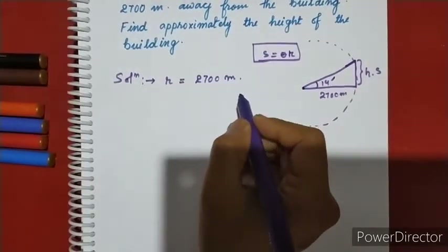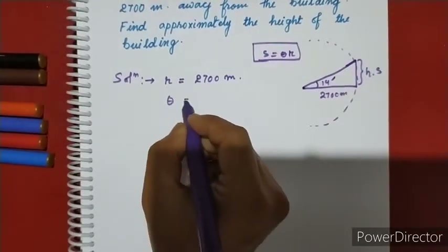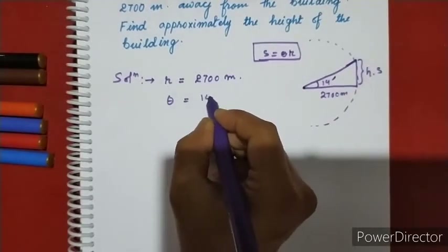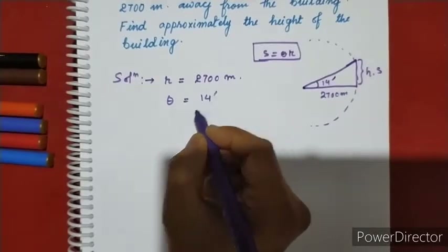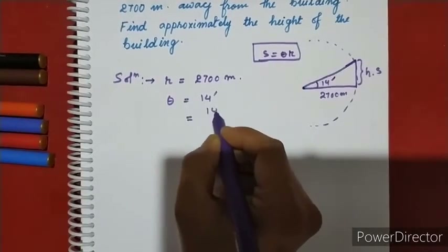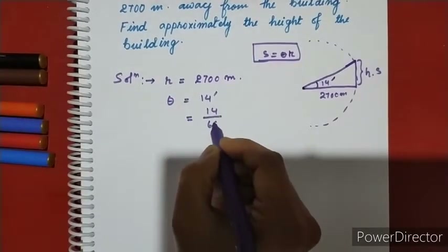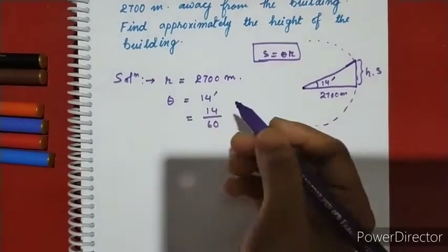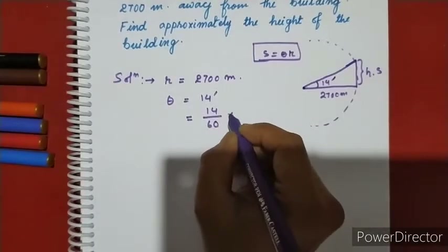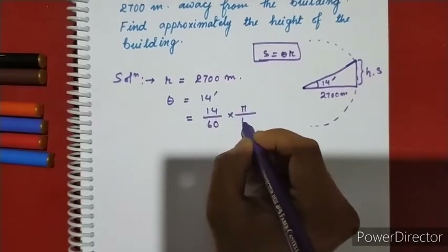The radius r is 2,700 meters. The angle is 14 minutes, which we convert: 14 divided by 60 degrees, then into radians using pi by 180.